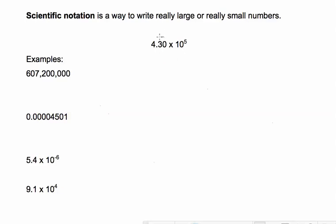This part of the number, the 4.30, is called the coefficient. The coefficient has to be between 1 and 10. An easy way to look at it is there can only be one number in front of that decimal place.